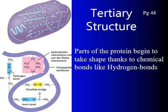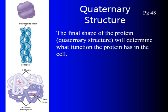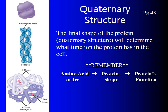The tertiary structure arises from hydrogen bonds and also disulfide bonds. If an amino acid is moved, the disulfide bridge shifts and the shape changes slightly. The quaternary structure is the final shape of the protein, and this truly determines the protein's function. Remember: the amino acid order determines the protein shape, and the protein shape determines its function. This concept is especially important when we get to genetics.